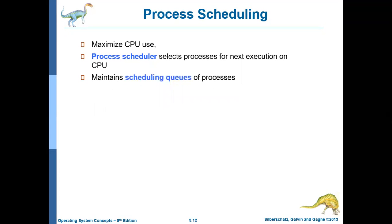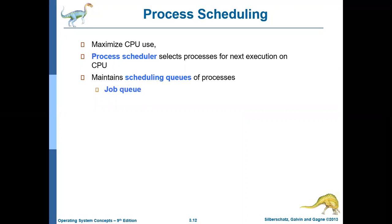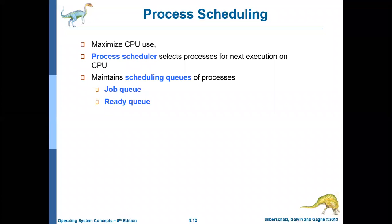The first type of queue is called the job queue. The job queue contains all the processes that are currently in the system. Then we have the ready queue. The ready queue contains the processes which are ready for execution — they are just waiting for the CPU to be assigned.